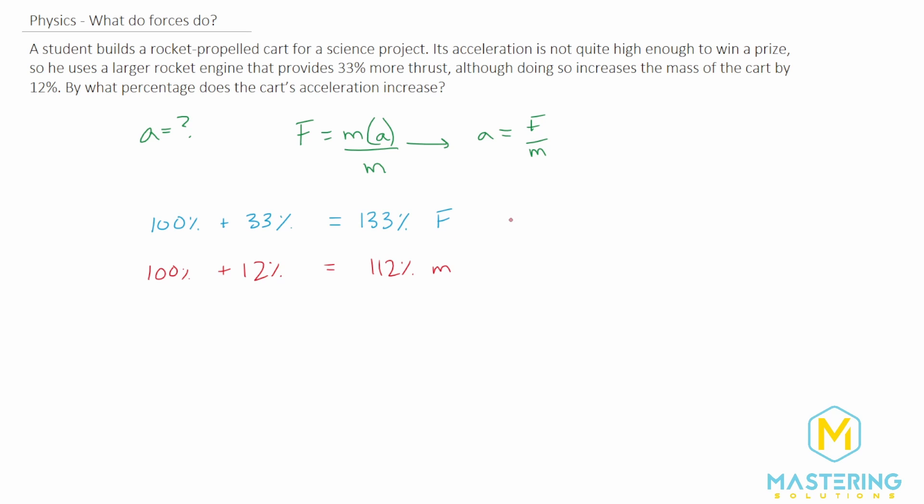I guess you could do it this way and it would be fine, but we'll convert it over so we'll divide both by 100. So that gives us 1.33 newtons for the force and then that gives us 1.12 kilograms for the mass.